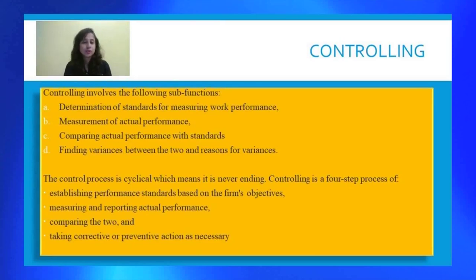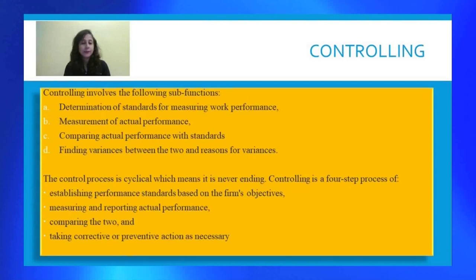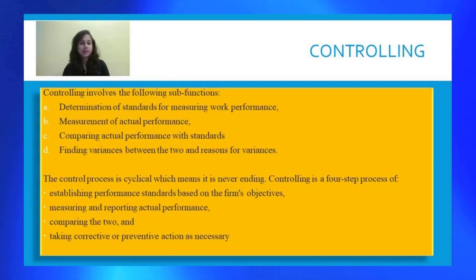The control process is cyclical in nature, which means it is never ending. Controlling is a four-step process: establishing performance standards based on the firm's objectives, then measuring and reporting actual performance, then comparing the two, and taking corrective or preventive actions as and when necessary. These are the four steps of the controlling process.